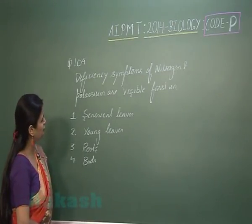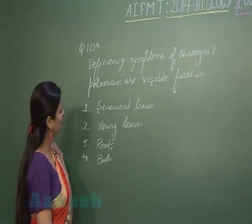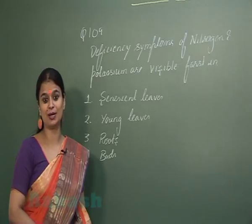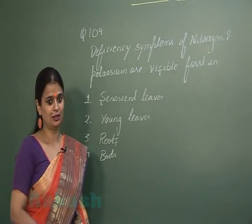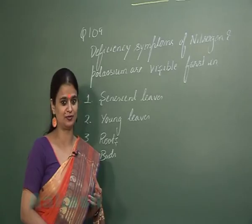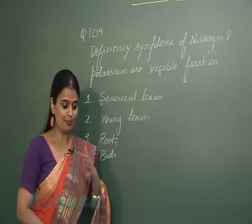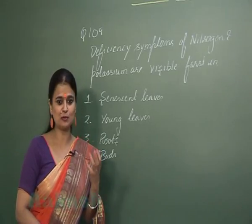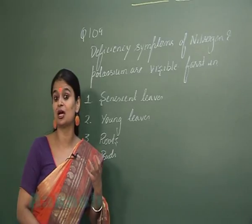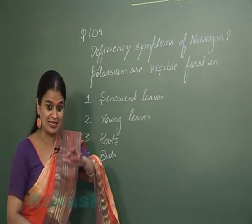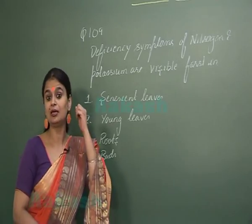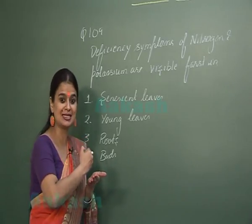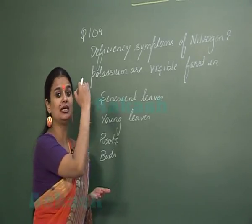Question number 109: deficiency symptoms of nitrogen and potassium are visible first in — nitrogen and potassium are mobile elements. In senescent leaves, macro molecules undergo breakdown, and the mobile elements move from the senescent leaves to the young leaves.